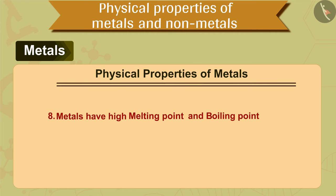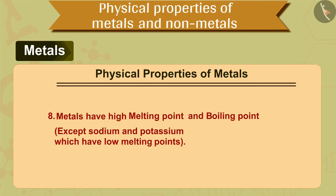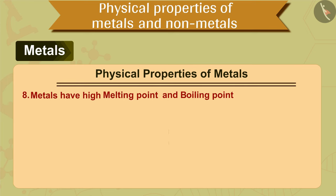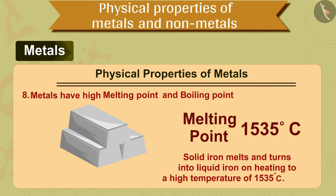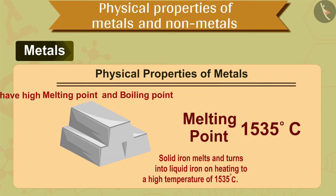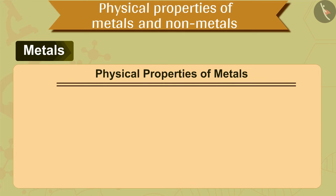The eighth property of metals is that metals have high melting and boiling points, except sodium and potassium which have low melting points. For example, iron has a high melting point of 1535 degrees Celsius, meaning solid iron turns into liquid iron when heated to that temperature.